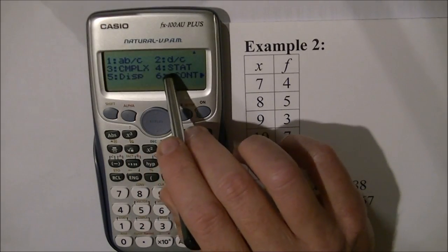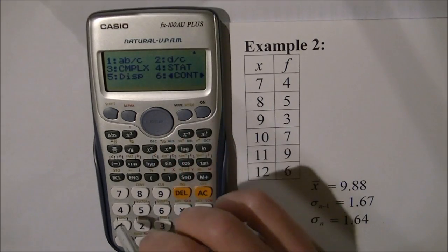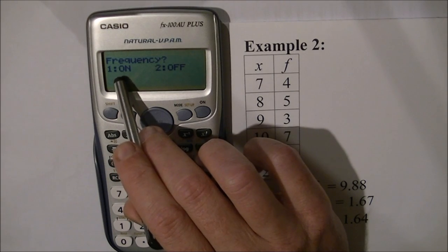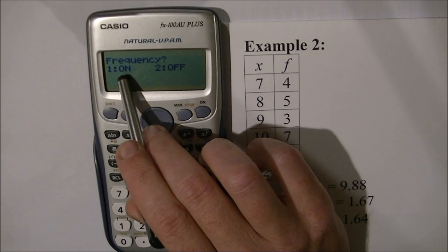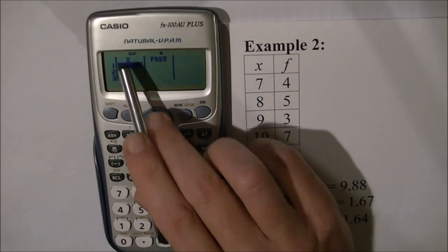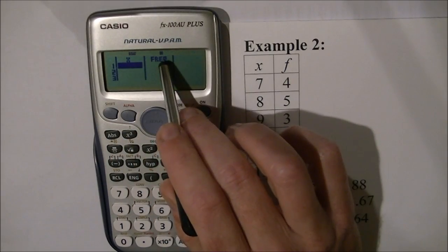Option 4 has a statistics menu. Press 4. It asks if I want the frequency column ON or OFF. I'll turn it ON by pressing 1. Here's my table now with X and frequency columns.